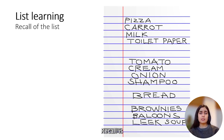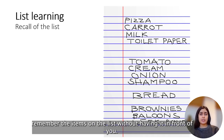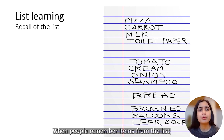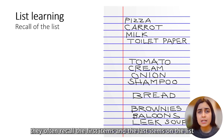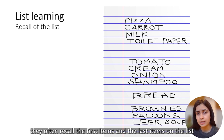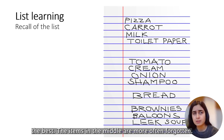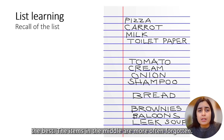Recall is when you remember the items on the list without having it in front of you. When people remember items from the list, they often recall the first items and the last items on the list the best, while the items in the middle are more often forgotten.